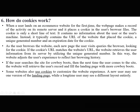How do cookies work? When a user lands on an e-commerce website for the first time, the web page makes a record of the activity on its remote server and places a cookie in the user's browser files. The cookie is only a short line of text containing no information about the user or their machine — instead it typically contains the URL of the website, a unique generated number, and an expiration date. As the user browses, each new page checks the browser for the cookie. If the cookie's URL matches the website's URL, the website retrieves user information from its server using the unique generated number.